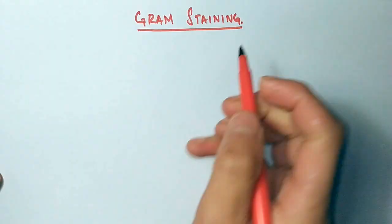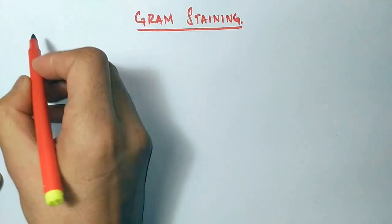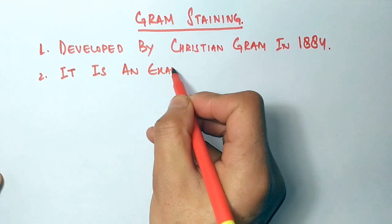First, it was developed by Christian Gram in 1884. It is an example of differential staining and it uses more than one dye here. It has both primary dye as well as secondary dye, and in this technique we differentiate between two types of bacteria.